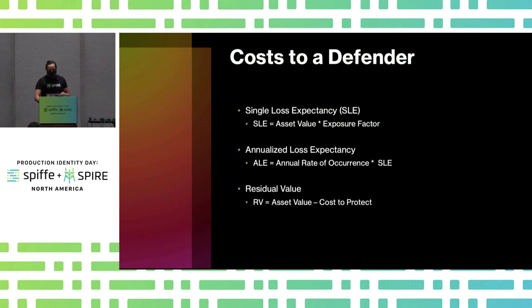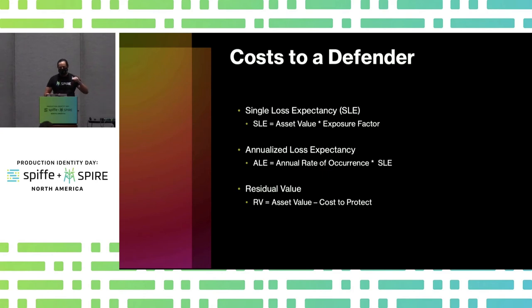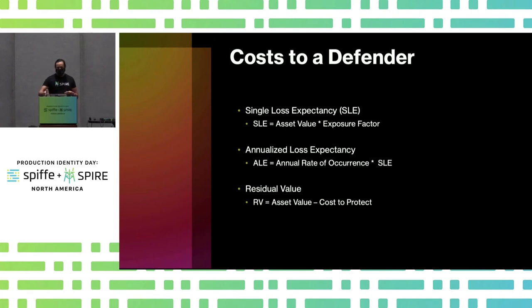The cost framework for defenders — which infosec and security teams commonly use — involves: what is the value of a particular system, and what is the exposure factor, meaning how much loss occurs when an incident happens? For a single event it can be difficult to quantify, but across your whole infrastructure — if you lose a hard drive, if a microservice is broken into — what is the value lost? How often will that happen over a year? That gives you the annualized loss expectancy.